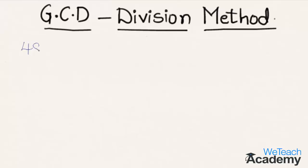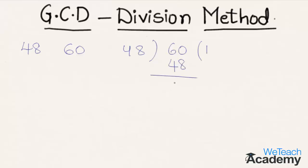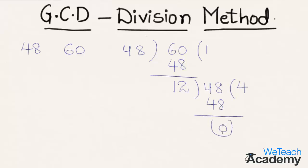Let us assume two numbers: 48 and 60. The first step is to divide the larger number 60 by the smaller number 48. Here 48 one time is 48, and by subtracting 48 from 60 we get 12 as the remainder. Then dividing 48 by the remainder 12, we get 12 four times is 48, and the remainder is zero. So the last nonzero remainder is the greatest common divisor, which is 12.